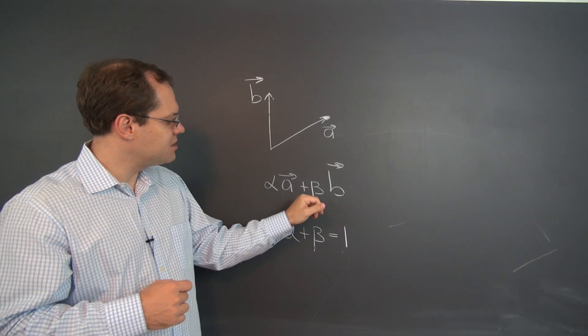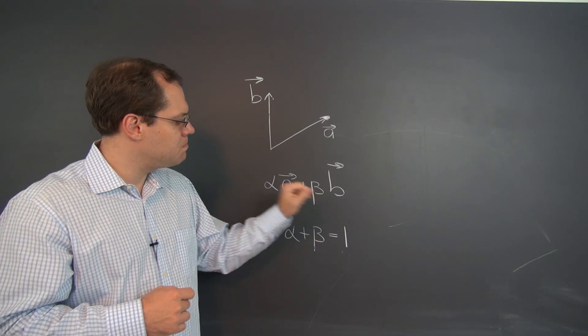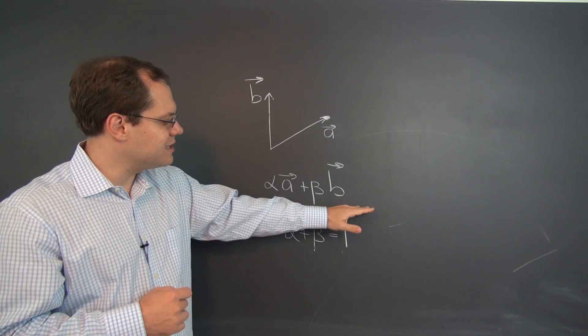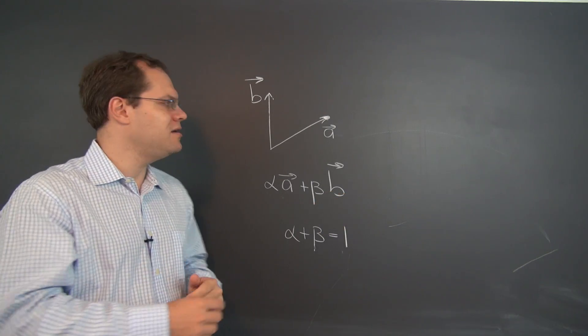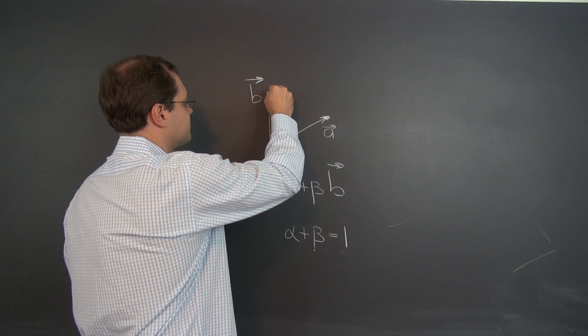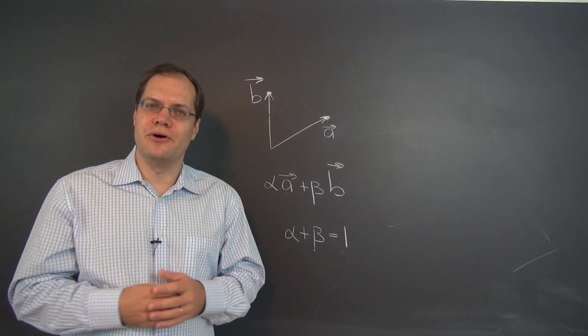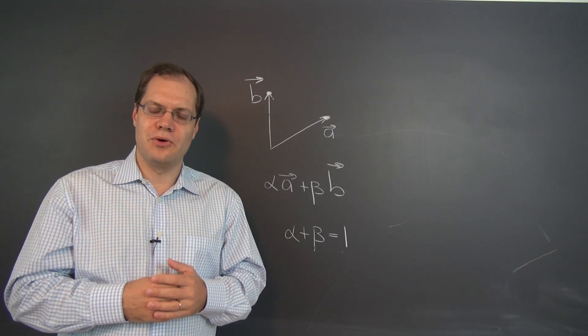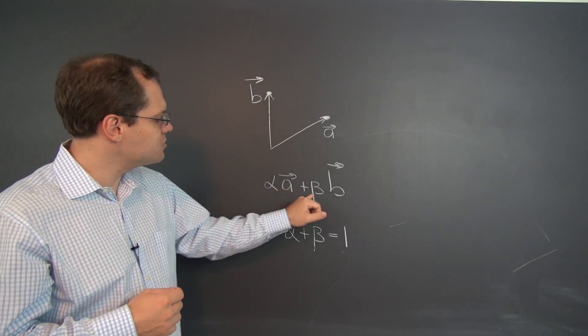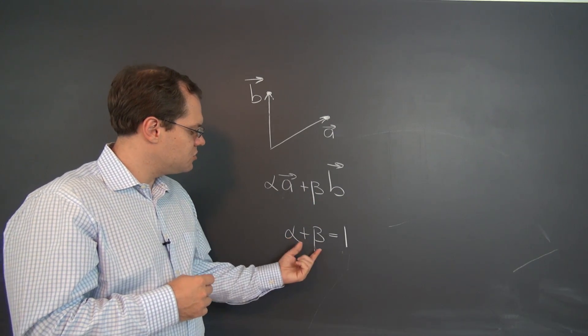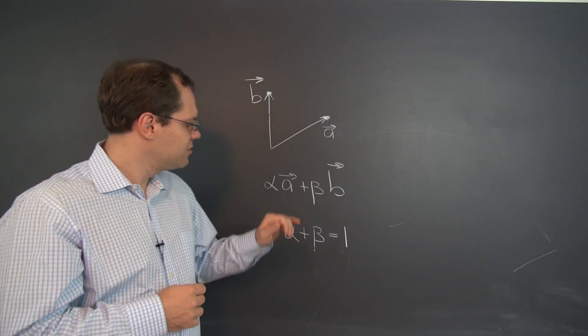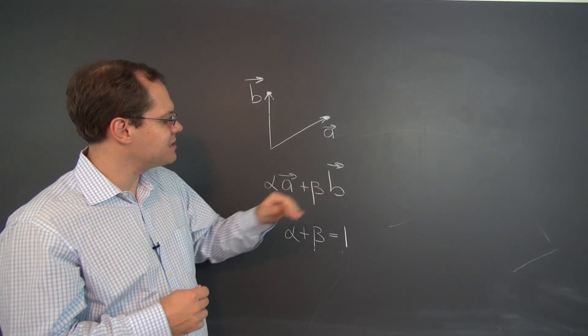Let's find another particular combination that works, which is beta equals 1 and alpha equals 0. And of course, then the linear combination evaluates to b, and we're right here. So now we have two points. That's certainly not enough to get an idea of the shape, so let's construct a few more points. How about taking alpha equals 1 half and beta equals 1 half. Two halves certainly add up to 1, so that linear combination works.